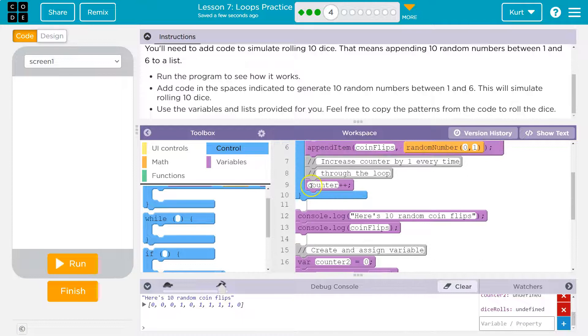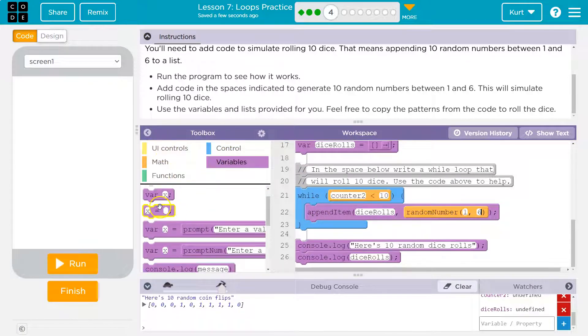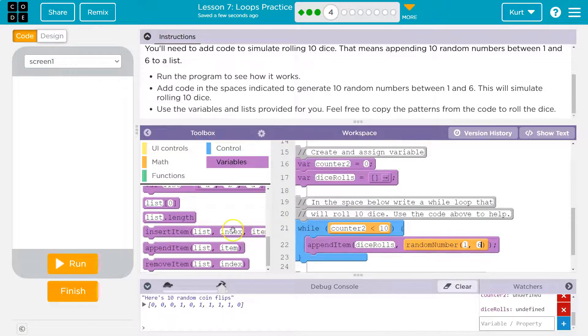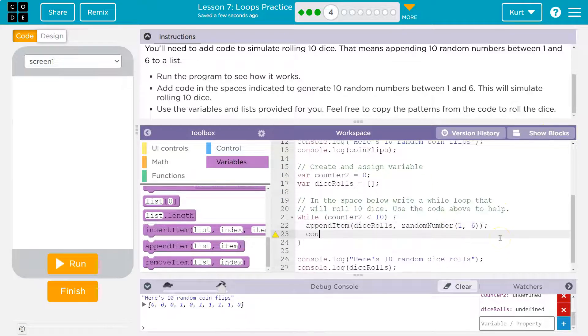So we got to make sure we add to counter. And to do that, just like they did up here, counter plus plus. Ours is counter two plus plus. Okay. And again, that is identical. They don't give us a block for it. Interesting. All right. Counter two plus plus.